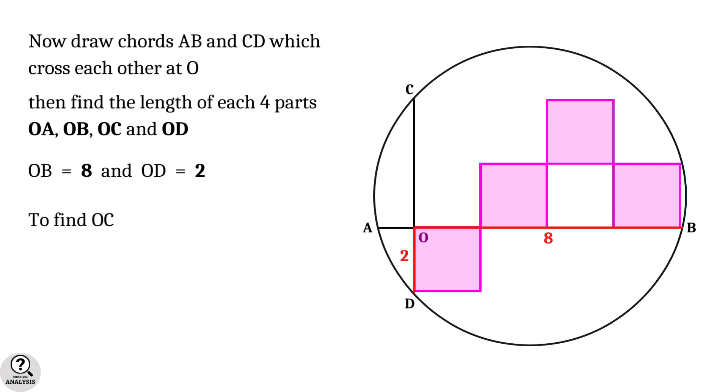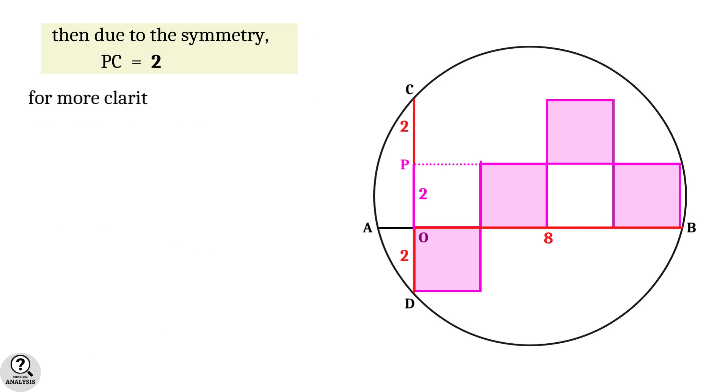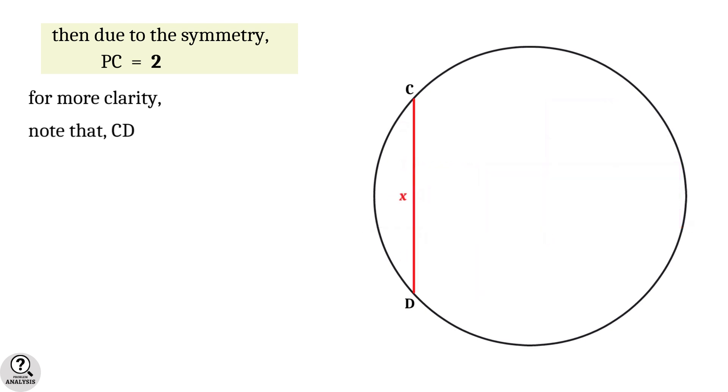Now to find the side OC, first note that OP equals 2 units. Then, due to the symmetry, the side PC also equals 2 units. But why this symmetry?